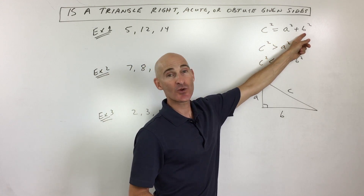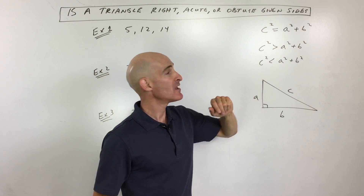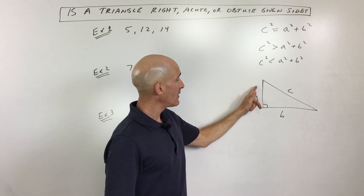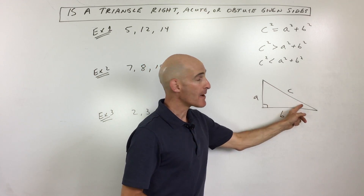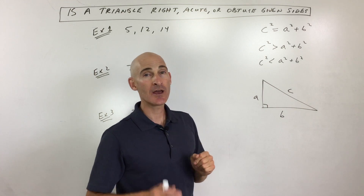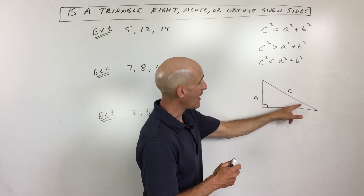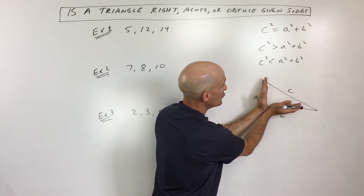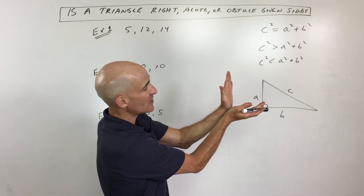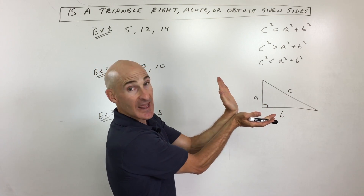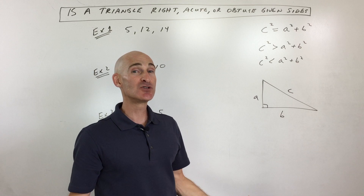You know the Pythagorean Theorem — c squared equals a squared plus b squared. If you have a right triangle, this leg squared plus this leg squared equals the hypotenuse squared. But what would happen if the hypotenuse, the longest side, got even longer? Well, you can see it's going to open that angle up — it's going to make this from a right angle to an obtuse angle.